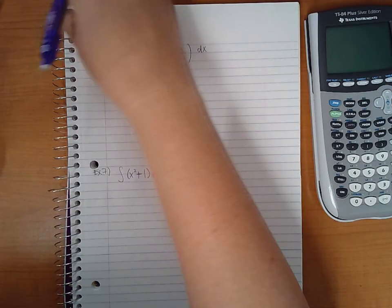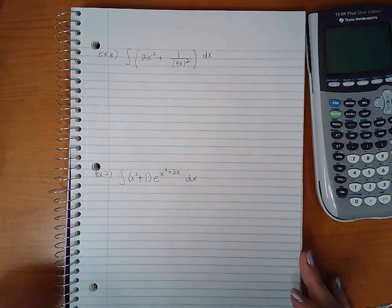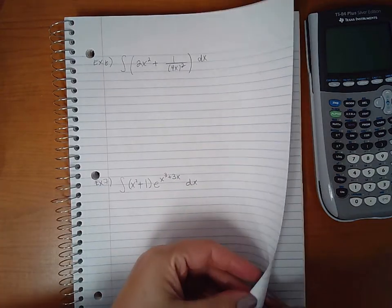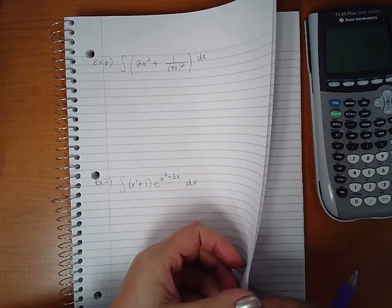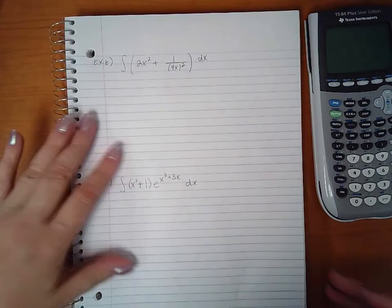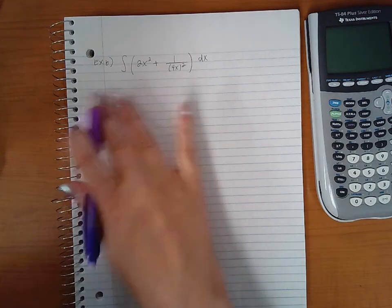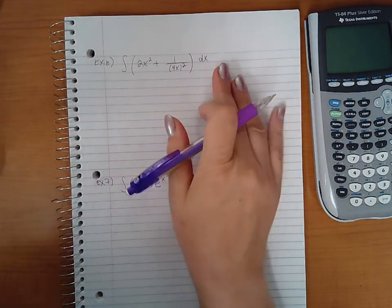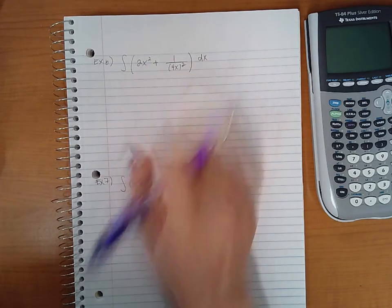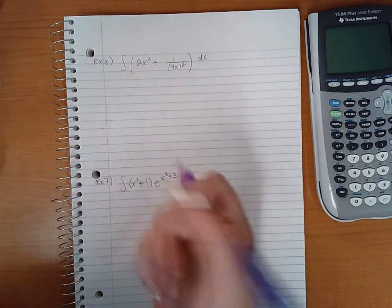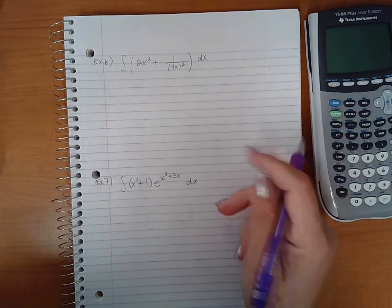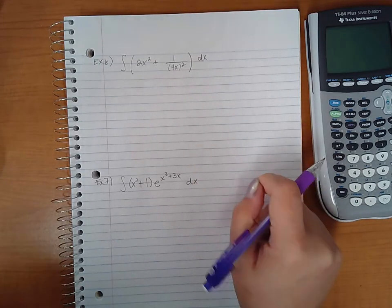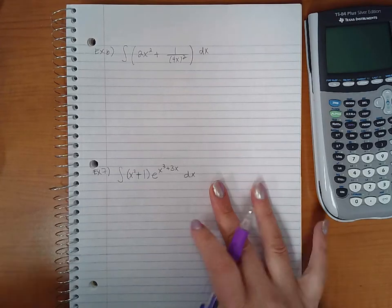So this is I believe part four of the integration by parts. We've got a couple more examples and then this should be the end of the section. Here we've got example six, they want us to integrate this. It doesn't say any directions on it, but usually when they just give you the problem like that they're going to want you to simplify it, and the only way to simplify this is to actually integrate it, so we're going to go ahead and do that.